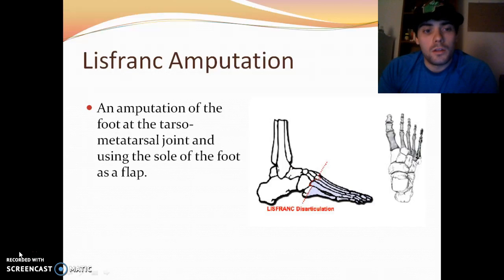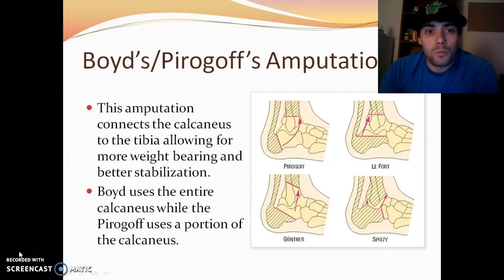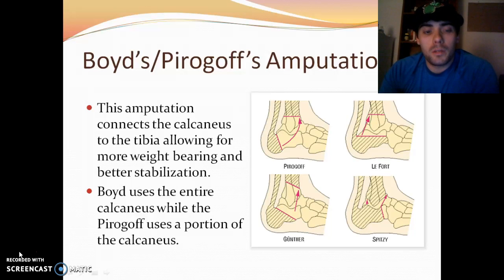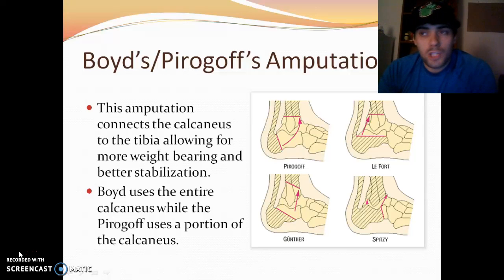The Lisfranc amputation is at the tarsal-metatarsal joint, and it's also a flap amputation where they use the sole of the foot as the flap. Boyd's and Pirogoff's amputation connects the calcaneus to the tibia and fibula, producing a more weight-bearing and better stabilized stump. The difference is that Boyd uses the entire calcaneus without shaving any of it off, whereas Pirogoff uses only a portion of the calcaneus.